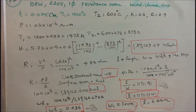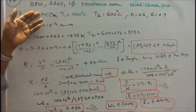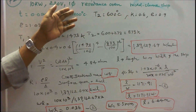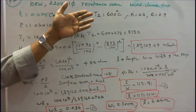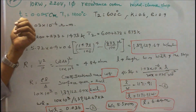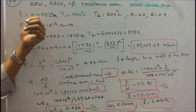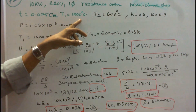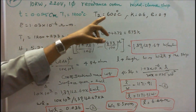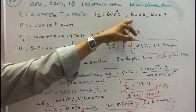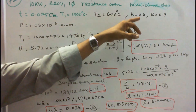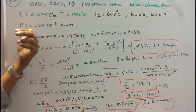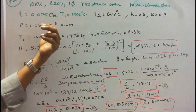In this problem, input power is 10kW, operating voltage is 220V, single-phase resistance oven, nickel-chrome strip, thickness of the strip is 0.025 cm, T1 equals 1200°C, T2 equals 600°C. Converting to Kelvin: T1 equals 1473 Kelvin, T2 equals 873 Kelvin. Radiating efficiency is 0.6, emissivity is 0.9, and resistivity of nickel-chrome is 1.03×10⁻⁶ ohm-meter.